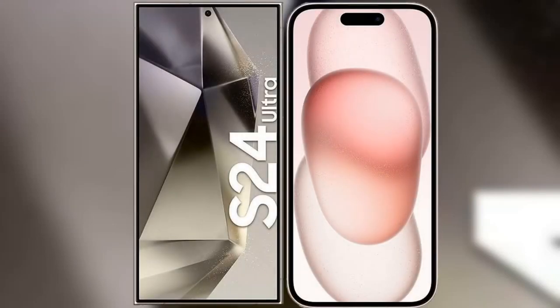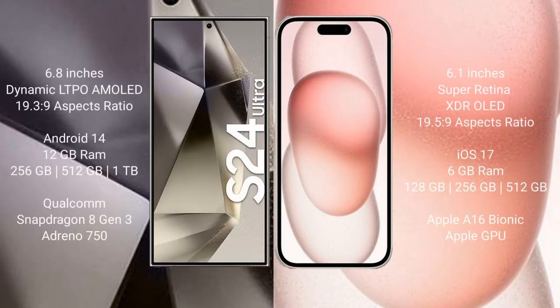I will compare the new Samsung Galaxy S24 Ultra with iPhone 15. Samsung Galaxy S24 Ultra comes with a 6.8-inch Dynamic LTPO AMOLED display and aspect ratio 19.3:9. iPhone 15 comes with a 6.1-inch Super Retina XDR OLED display and aspect ratio 19.5:9.